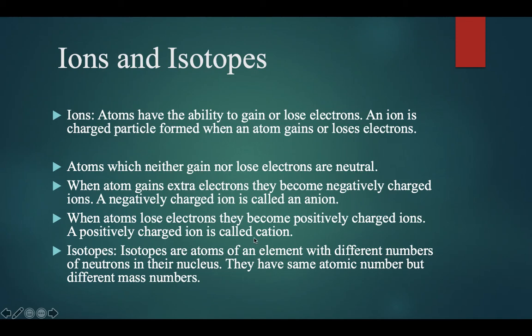Sodium and potassium are commonly found in their cation forms. Isotopes are atoms of an element with different numbers of neutrons in their nucleus. They have the same atomic number but different mass numbers.